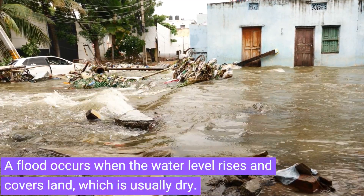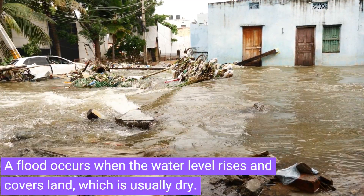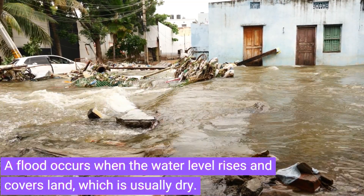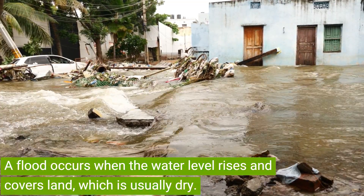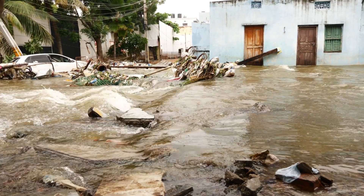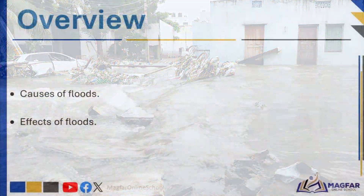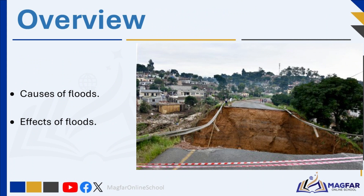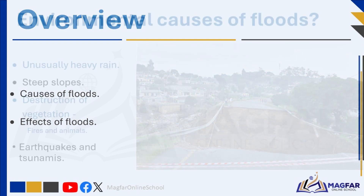Flash flooding is sudden, fast-moving floodwaters which occur during a sudden downpour of rain. What are some common causes of floods? Can you name a few effects of floods? What role does human activity play in exacerbating the frequency and severity of floods worldwide? Let's delve into the various aspects of floods, including their causes, effects, and community vulnerability.